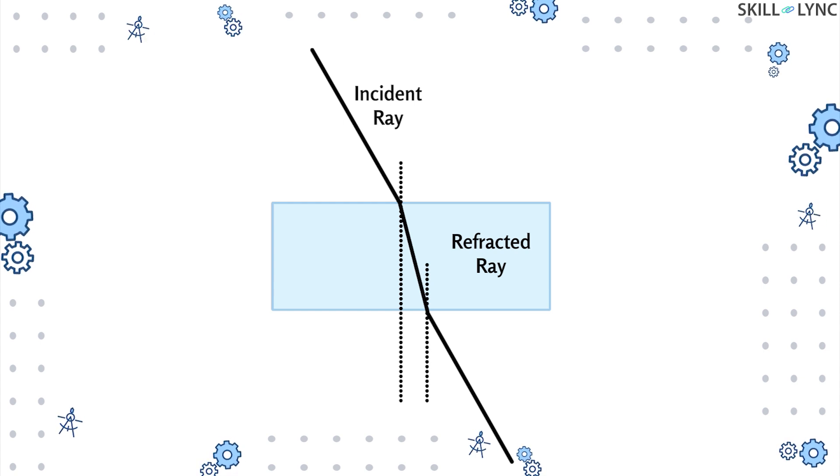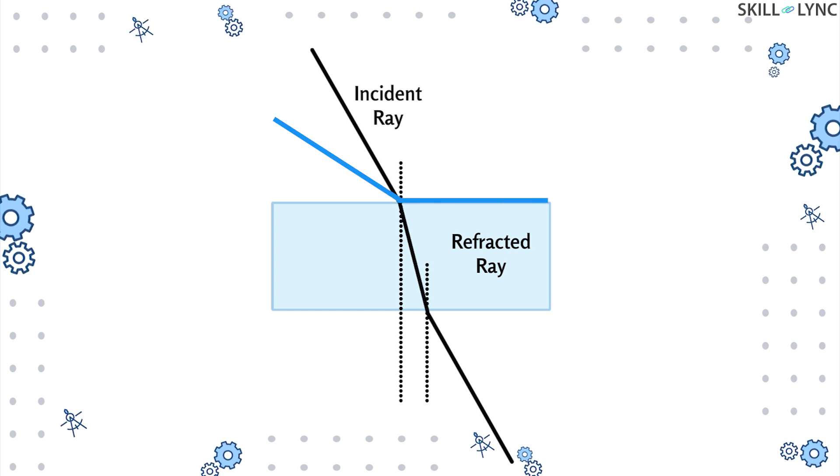From this we understand that a ray traveling from a rarer medium (in this case air) will bend towards the normal, while a ray traveling from a denser medium to a rarer medium will bend away from the normal. If the ray of light strikes the medium it is traveling to in such a manner that the ray is refracted at an angle of 90 degrees, then the incident angle is called critical angle.